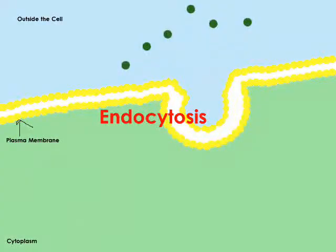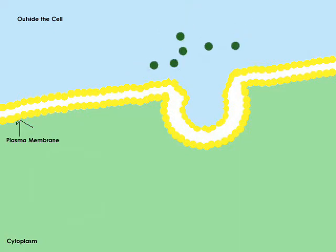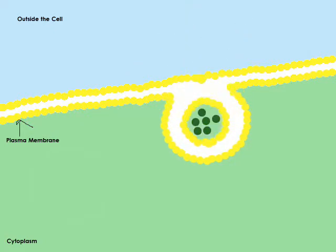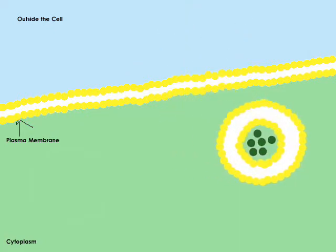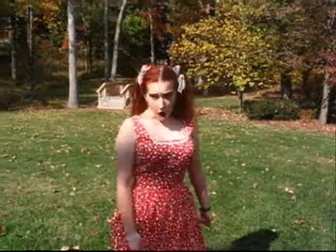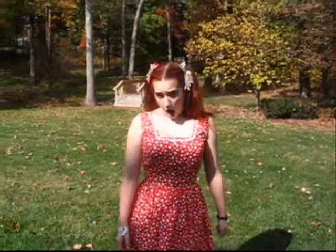What if materials want to get into the cell? Well, there is also a process called endocytosis. Endocytosis takes material into the cell within vesicles that bud inward from the plasma membrane. There are actually three types of endocytosis.